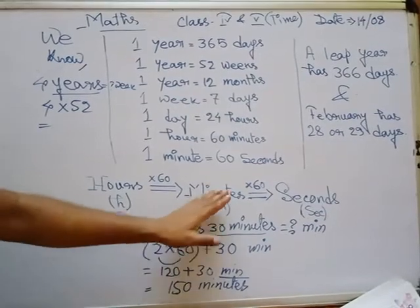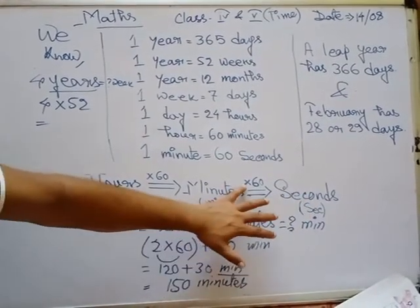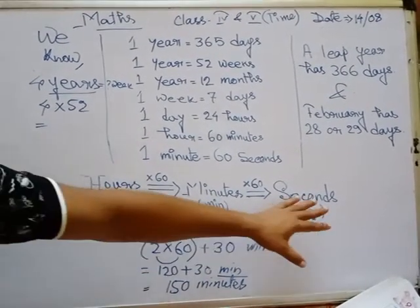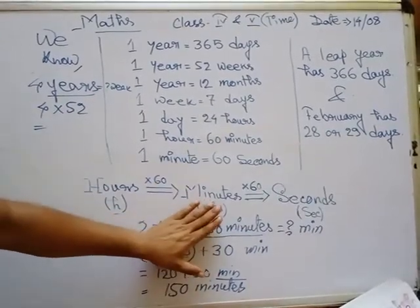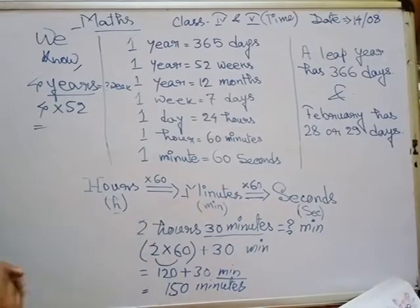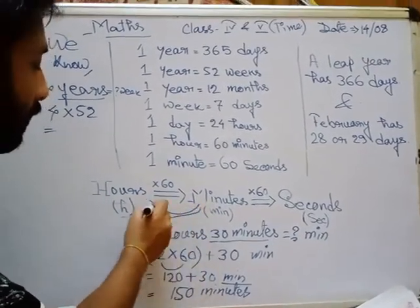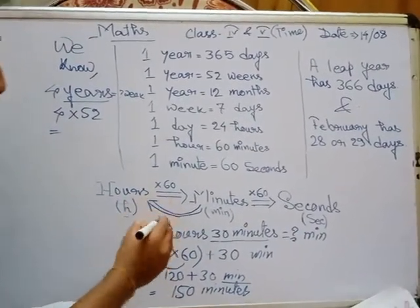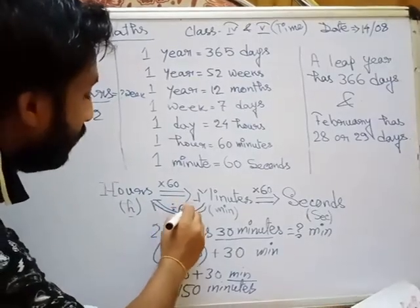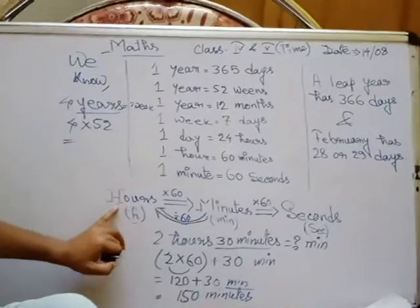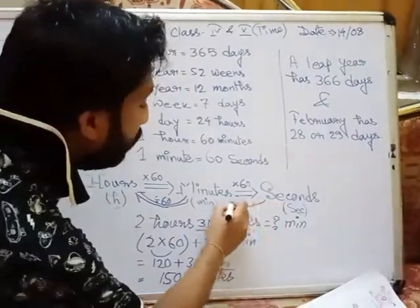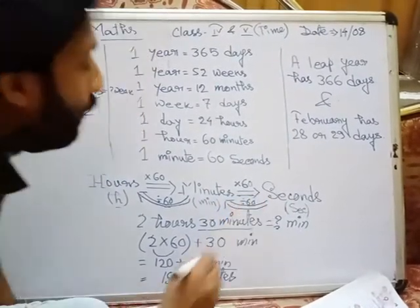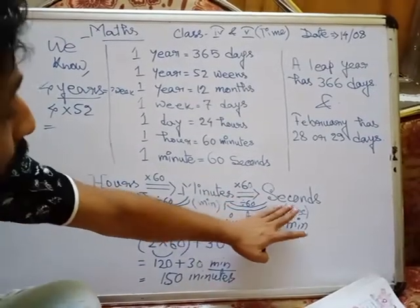If we convert minutes into seconds, we also multiply by 60. In the same way, if we convert seconds into minutes, we divide by 60. If we convert minutes into hours, we also divide by 60, because hour is the bigger unit from minutes, and minute is the bigger unit from seconds.